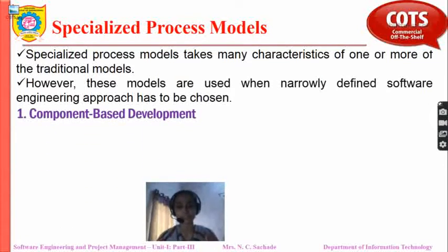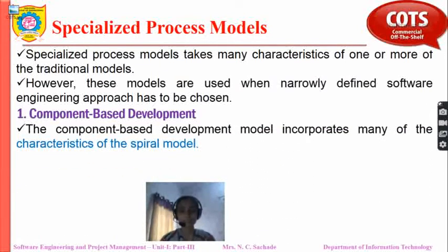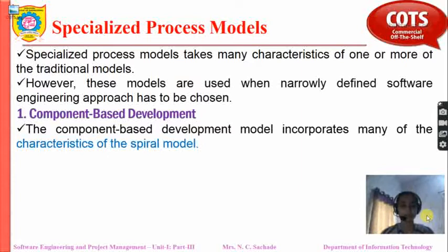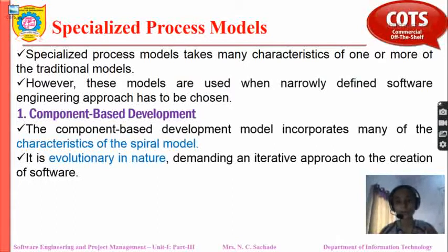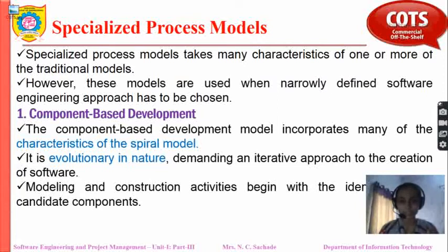The first specialized process model in the list is component-based development. We are going to see three different types of specialized process models. The component-based development model incorporates many of the characteristics of the spiral model. It follows the evolutionary approach in the spiral model, which demands an iterative approach to the creation of software. As we learn more about the product, we keep adding functionalities, keeping risks in mind. Modeling and construction activities begin with the identification of candidate components.